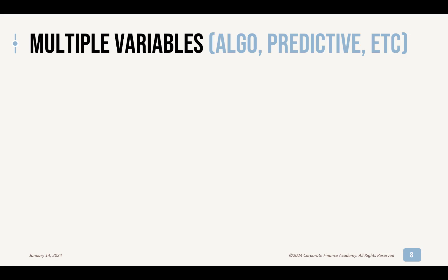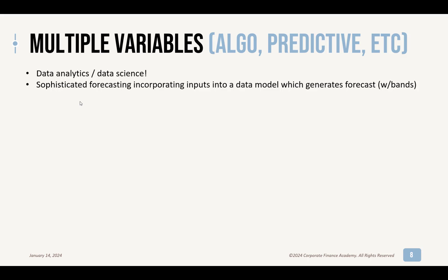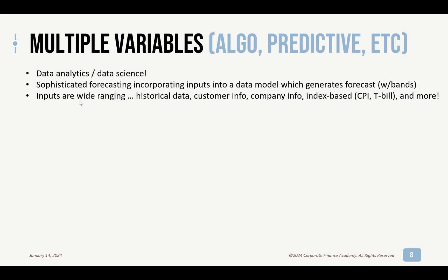Then you get to the world of data analytics and data science: multivariable or multiple-variable analysis, the multivariable forecast. These are where you're really developing an algorithm or predictive analytics — some sort of sophisticated forecasting tool taking different inputs into a model and generating a forecast. It usually has confidence bands as well — high and low. These inputs truly depend on your business, but they can be wide-ranging: your own historical data, customer info, company info, index-based data like CPI or T-bill, and much more. Usually this will require software — you could build these in Excel, but a lot will be done in R, Python, or other more sophisticated modeling software.